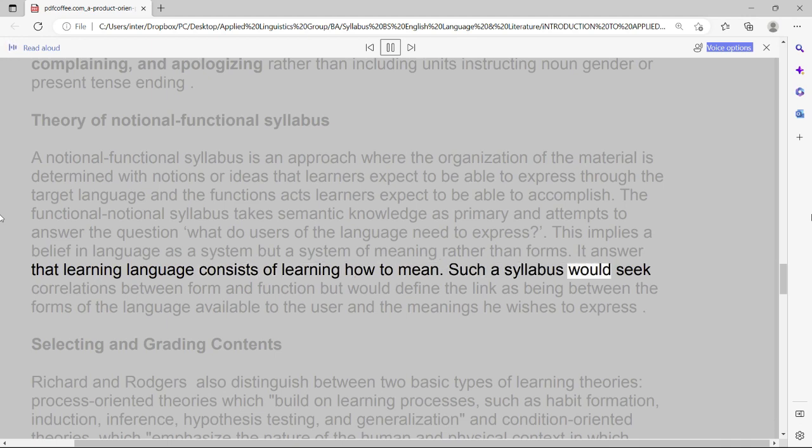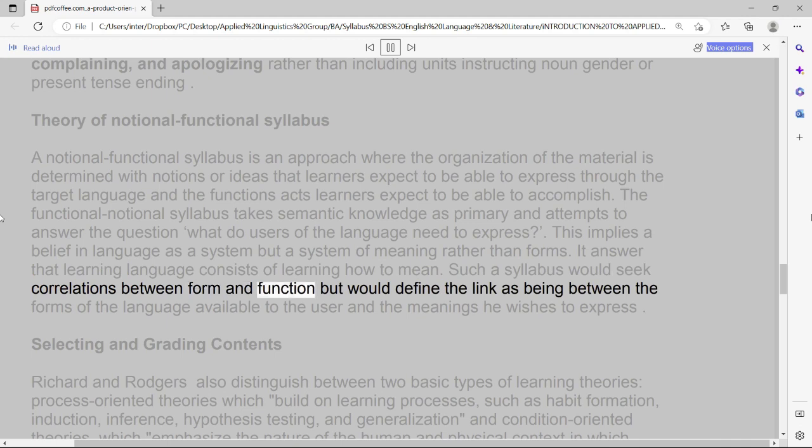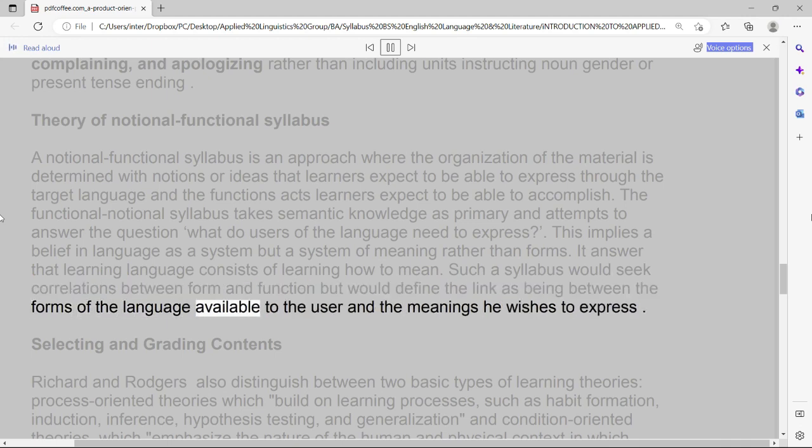It answers that learning language consists of learning how to mean. Such a syllabus would seek correlations between form and function but would define the link as being between the forms of the language available to the user and the meanings he wishes to express.